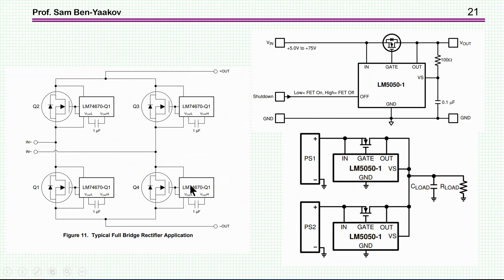I should stress that this unit for the bridge is different from another unit the same company manufactures — the LM5050 — which is for static operation, like an ideal diode. It is intended for applications like power supplies in an OR-ing configuration: if one supply has a certain output voltage and another with higher voltage is inserted, the higher-voltage one conducts and the other shuts off. This is for static DC operation, and this unit has a much faster response, but it is not the subject of this presentation.